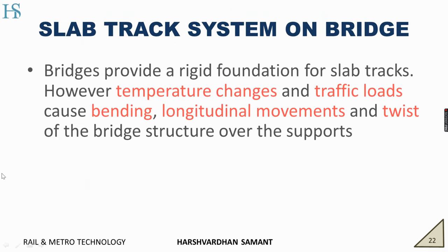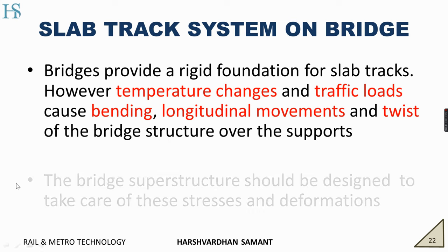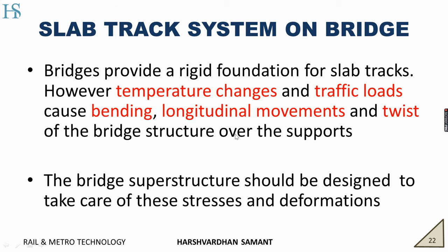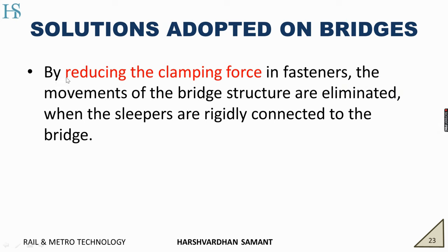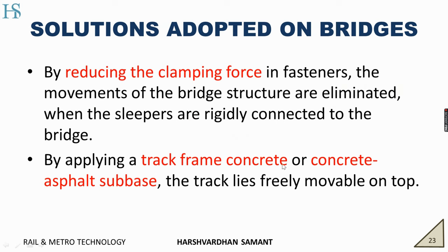Slab track system on bridges. Mostly we have seen metro viaducts or elevated structures — they are all slab tracks on bridges. Bridges provide a rigid foundation to slab tracks, so we don't have to provide an extra concrete slab, as this is provided by the deck top surface. However, temperature changes and traffic loads cause bending, longitudinal movements, and twists of the bridge structures over the supports. The bridge superstructure should be designed to cater for these stresses and deformations. Solutions adopted on bridges include reducing the clamping force in fasteners. The moments of bridge structures are eliminated if the sleepers are rigidly connected to the bridge. A track frame of concrete or concrete asphalt sub-base is provided between the track and the deck so that the track moves freely.